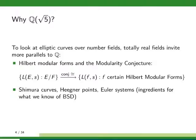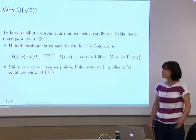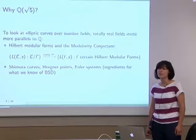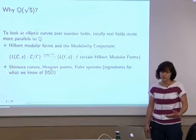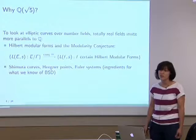Out of all the number fields in the world, why Q(√5)? We want a generalization of modular forms that hopefully would also have modularity, so we're going to be looking at Hilbert modular forms. To look at Hilbert modular forms, you need to restrict to totally real number fields. Along with the Hilbert modular forms, we also get parameterization by Shimura curves, Heegner points, and Euler systems — many of the ingredients for BSD as well.